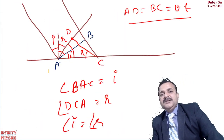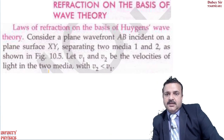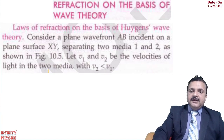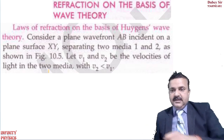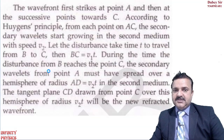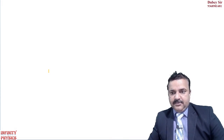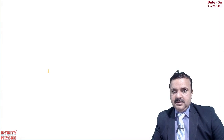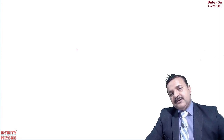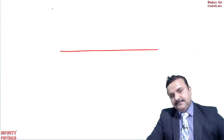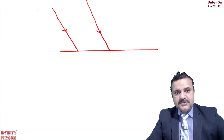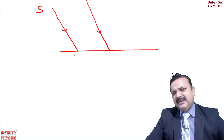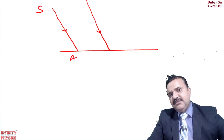On the basis of Huygens' principle we can also prove the law of refraction. Let us understand how we can prove refraction. Suppose light is traveling from a denser to a rare medium and is incident on the surface. Source S sends light; when it reaches point A, the wavefront is at position B in the first medium.